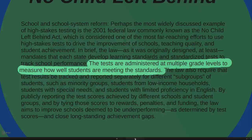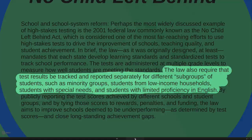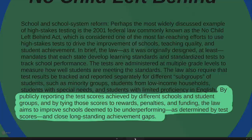The tests are administered at multiple grade levels to measure how well students are meeting the standards. What was fascinating about this law was that test results are tracked and reported separately for different subgroups of students, such as minority groups — identifying, for example, Hispanics and blacks — as well as students from low income households, students with special needs, and students with limited proficiency in English. By publicly reporting scores and tying them to rewards if you do well and penalties if you do badly, the law aimed to improve underperforming schools and close long-standing achievement gaps.